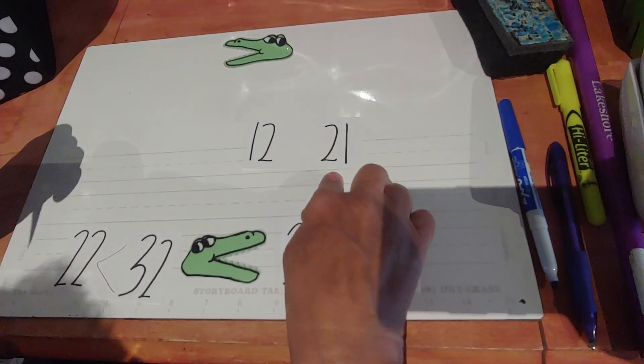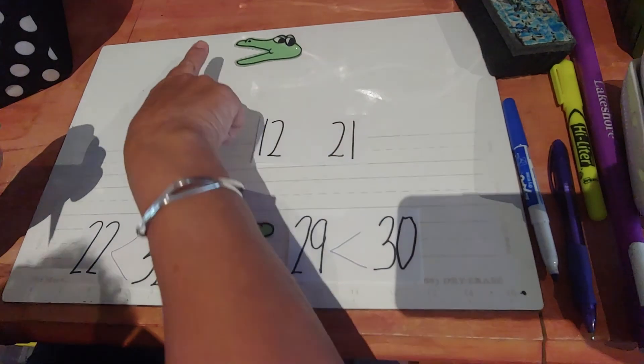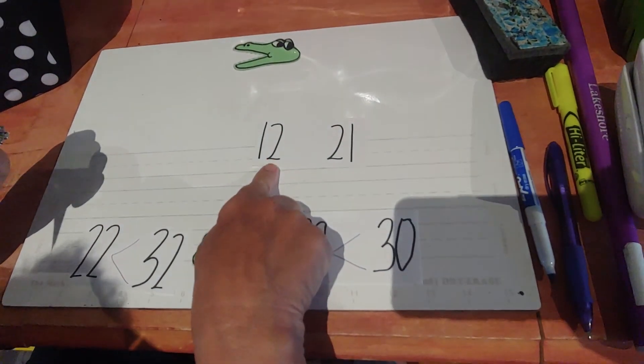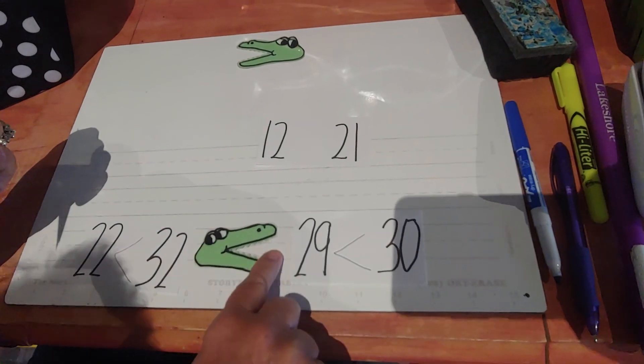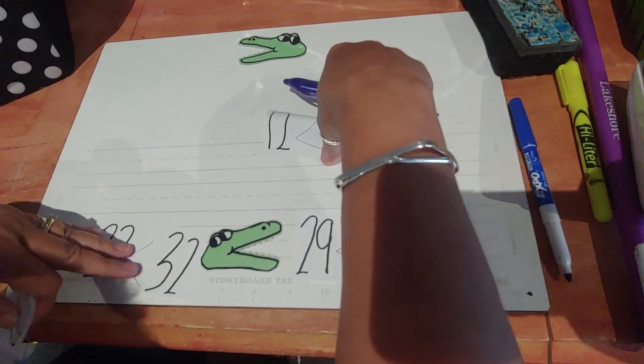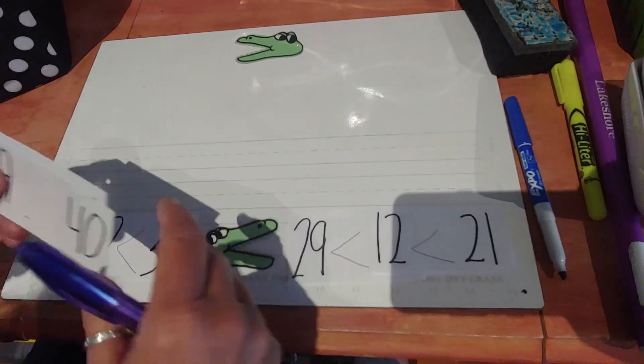12 and 21. 12 is what to 21? Greater than, is 12 greater than 21? Or is 12 less than 21? Right, it is less. So this alligator, he's getting kind of a good lunch today.